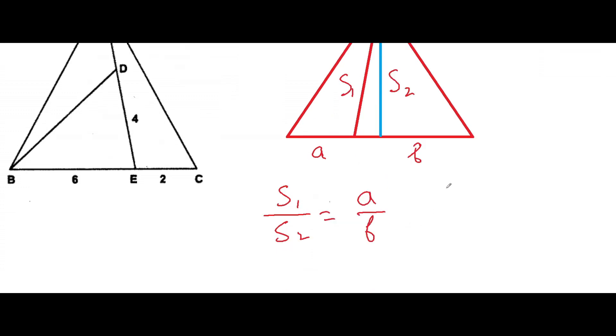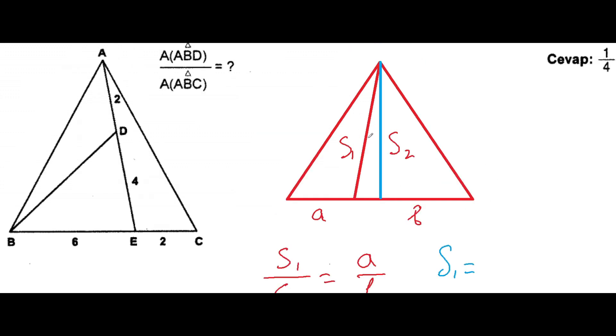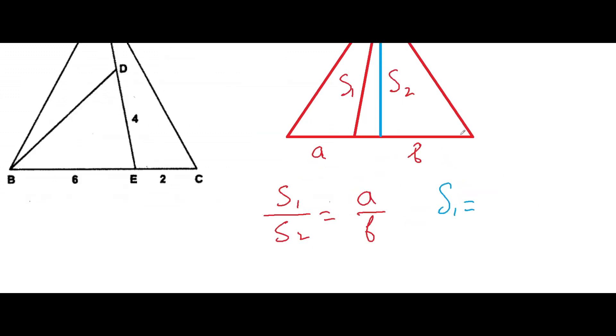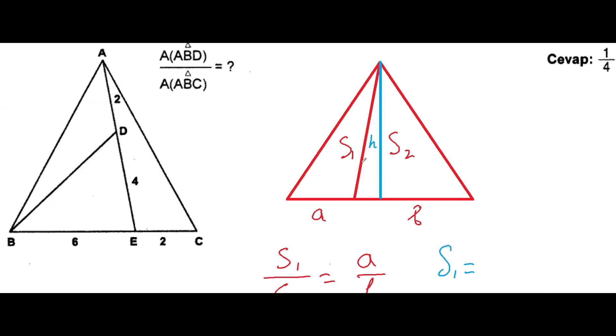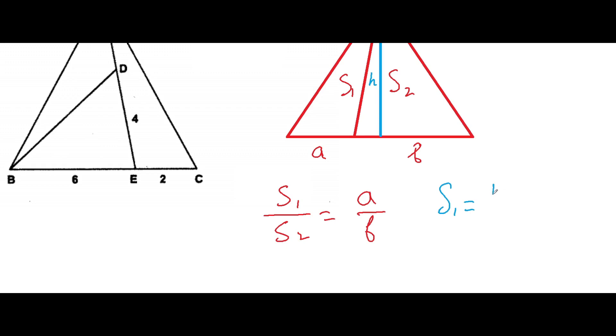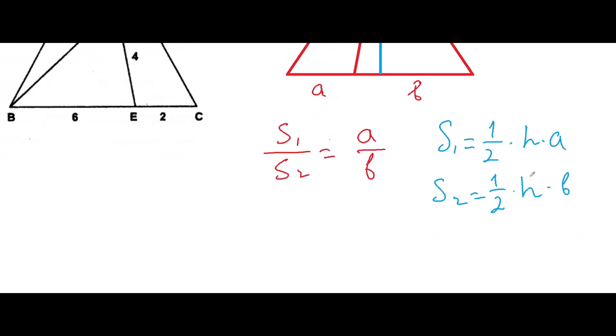We can find out the area S1. The area of the first triangle will be equal to, if we will write it as H, one-half times H times A. The first area. The second area will be again this fraction times H times B. If we will find out here in both equations...